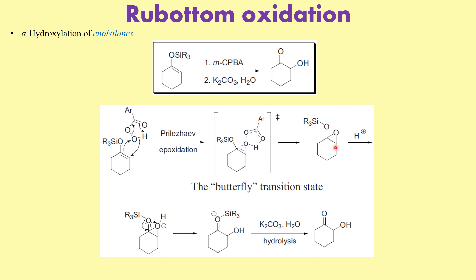In the next step, the acid generated from the epoxidation step undergoes protonation, as a result of which the lone pair of electrons on the silane comes back and opens the epoxide to give an intermediate, which on hydrolysis gives us the alpha-hydroxylated ketone. That is how this particular reaction proceeds.